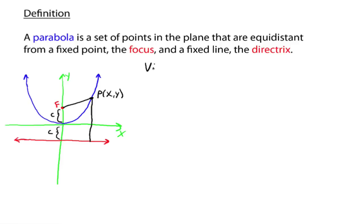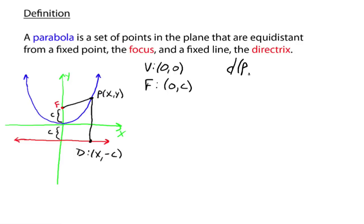The vertex is the origin, (0, 0). The focus f is at (0, c). And the point on the directrix — we'll call it d — is at (x, -c), because you go over x and down negative c. The distance between point p and f is to be equal to the distance between point p and d.